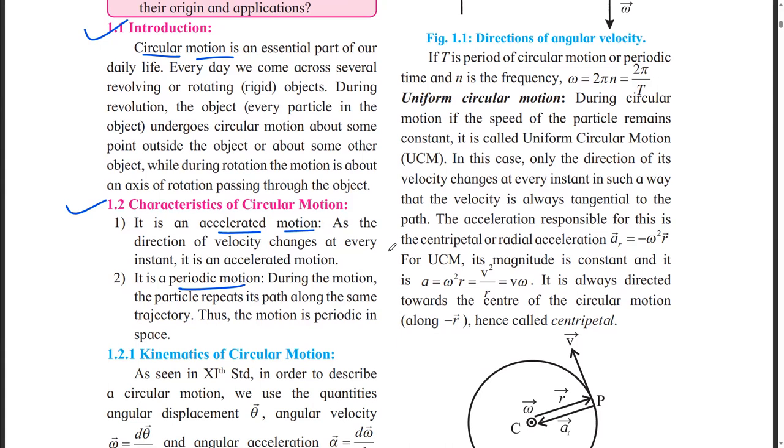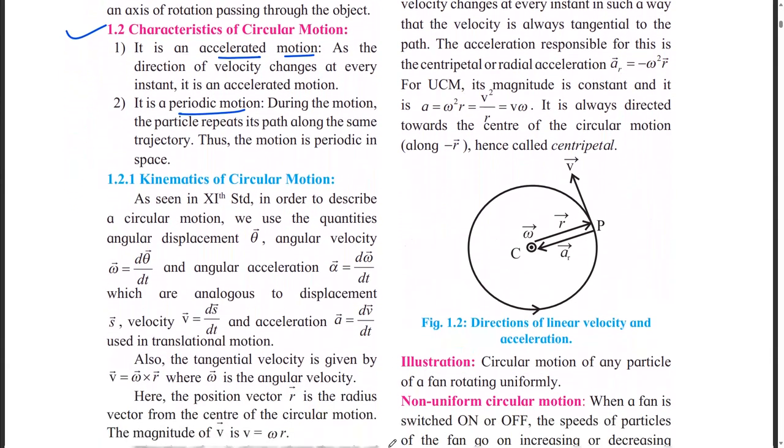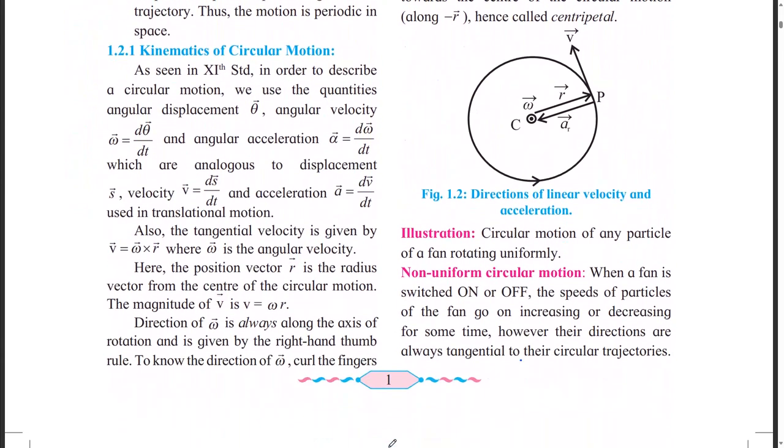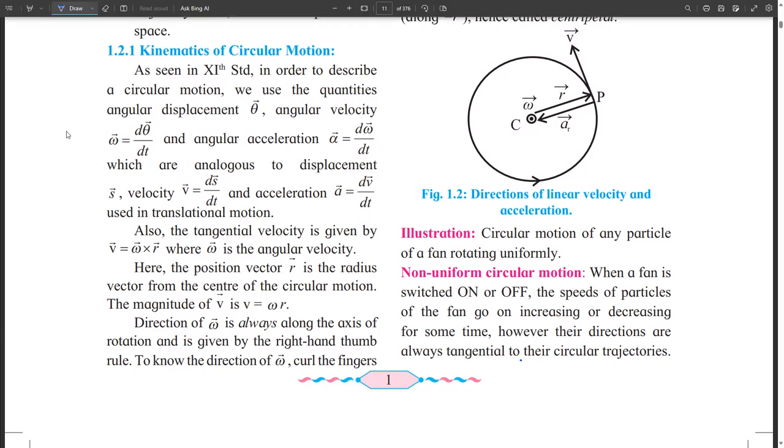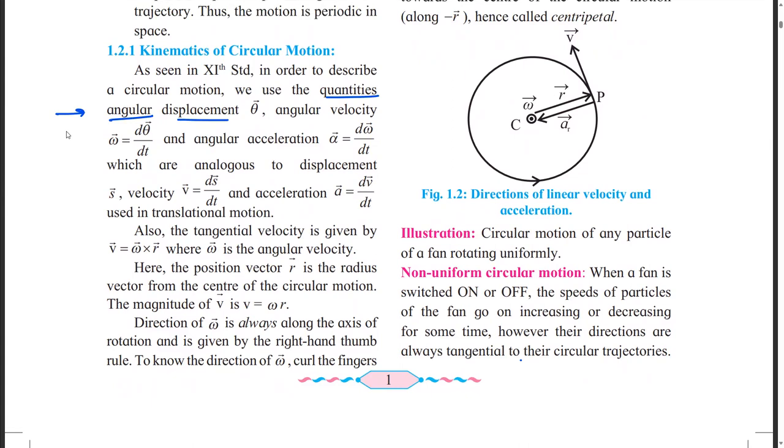So we have to see the kinematics of circular motion. Some part you have learned in 11th standard. When we learn the detailed kinematics of circular motion, we have to remember some quantities. Some terms are there. First is angular displacement - where the object goes. It's called displacement. How do we represent it?